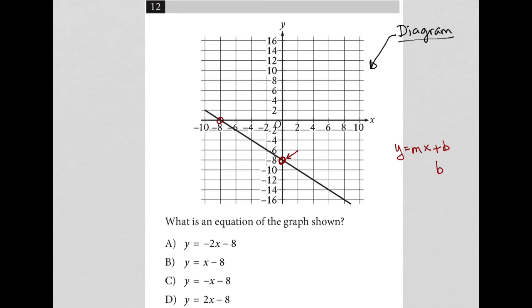So I know that my b value, my y-intercept should be negative 8. But looking at my answer choices, all of my b values are negative 8. So that's not really helping me at all.